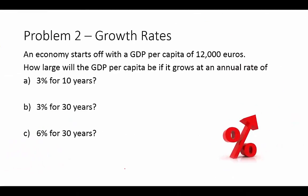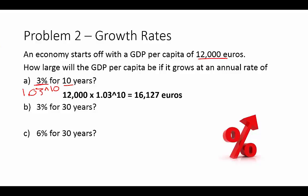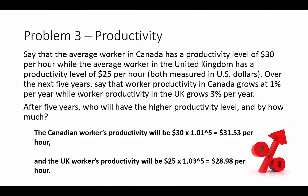On to problem two — growth rates. An economy starts off with a GDP per capita of 12,000 euros. How large will the GDP per capita be if it grows at an annual rate? This is exactly the same calculation as before. We start with 12,000 euros, find our percentage — plugging it in as 1.03 — to the power of 10 years. The second and third scenarios follow the same structure.